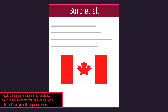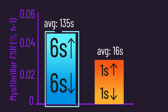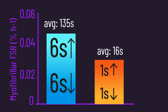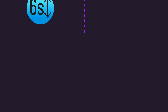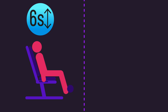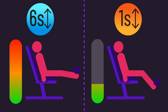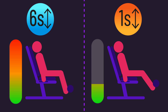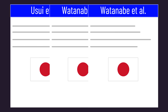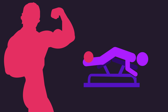With the Canadian Bird and colleagues study finding greater myofibrillar protein synthesis with a longer time under tension, they did not equate proximity to failure. The 6-second lifting and lowering condition involved performing repetitions to failure, while the 1-second condition did not perform reps anywhere close to failure — they simply matched the number of reps. Similarly, the three studies out of Japan finding greater hypertrophy with slower rep tempos also did not equate proximity to failure.